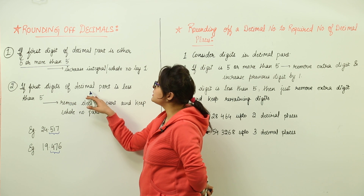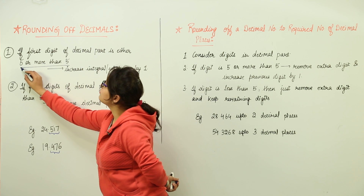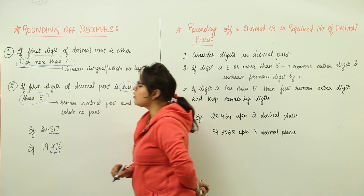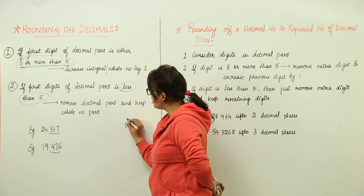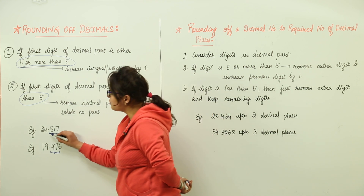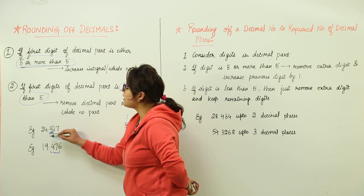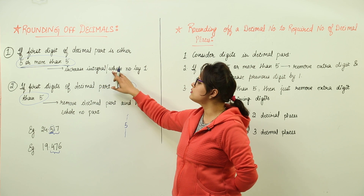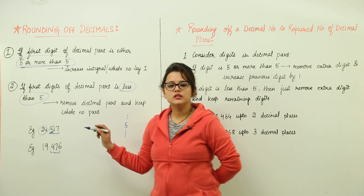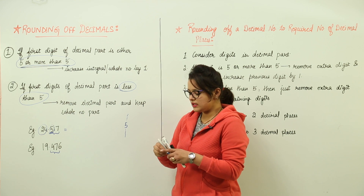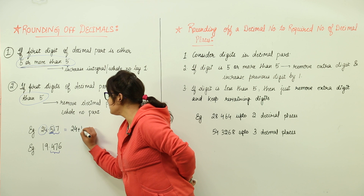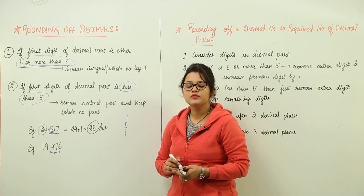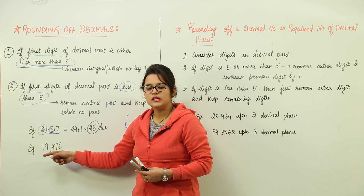Case one: if the first digit of the decimal part is 5 or more than 5, increase the integral or whole number by 1. For example, if the number is 24.5, the first digit of the decimal part is 5, so we increase the integral part by 1: 24 plus 1 gives you 25. That is the approximated value.